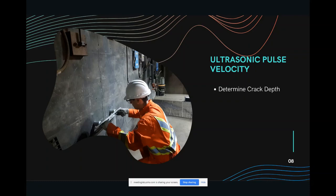Ultrasonic pulse velocity in a specific test configuration enables engineers to evaluate the depth of existing cracks. In the example shown, a very wide crack — two to three millimeters — was observed on a concrete hoist structure: a 100-meter-long, 60-centimeter-thick concrete wall holding a mine hoist in Sudbury, Ontario. The objective was to determine whether cracks visible on both surfaces of the concrete wall were penetrating through the full thickness. Ultrasonic pulse velocity can address these types of questions about how deep cracks penetrate into concrete.